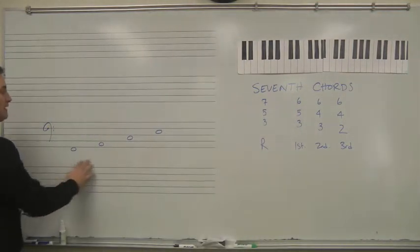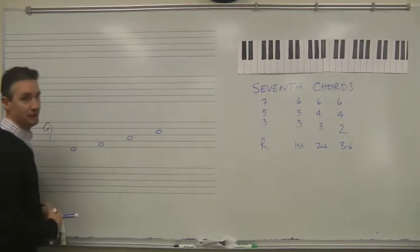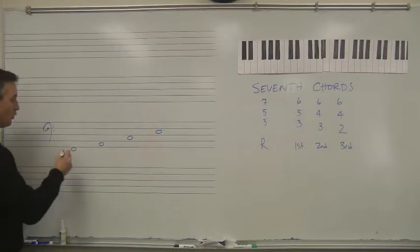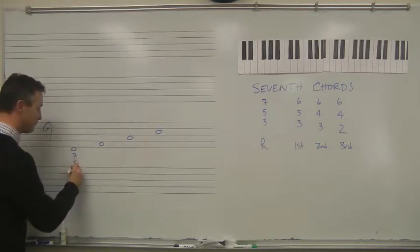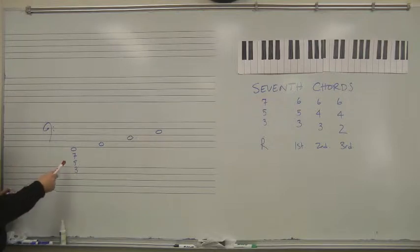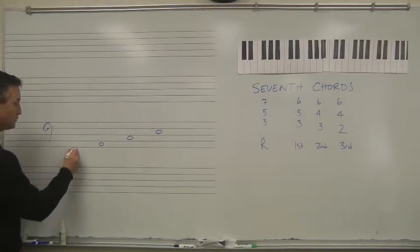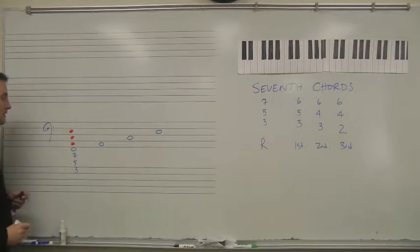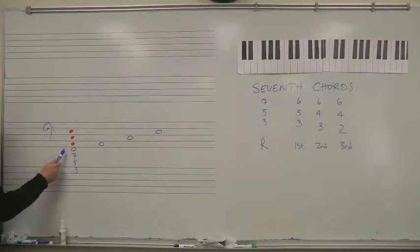Now let's go over here and actually map that out so you can see it. Root position: 7, 5, 3. If I follow up from there and count the intervals, let's start at the bottom: 3—1, 2, 3—gives me this note. 5—1, 2, 3, 4, 5—gives me this note. 7—1, 2, 3, 4, 5, 6, 7—gives me this note. 7, 5, 3 creates a root position seventh chord: F, A, C, E.